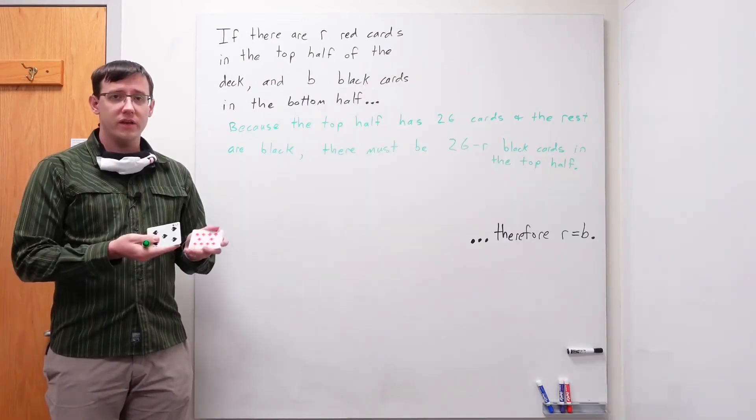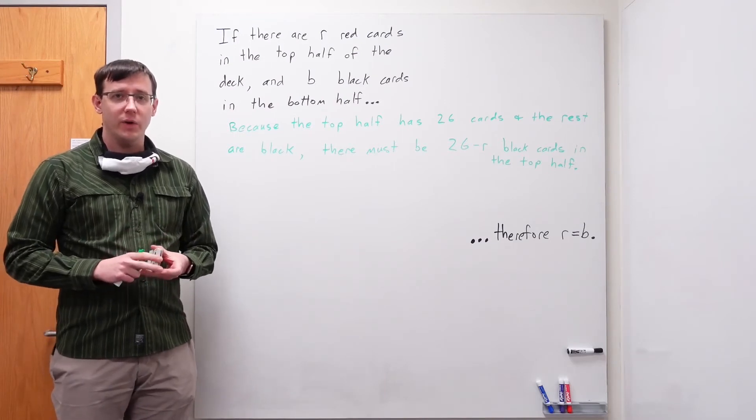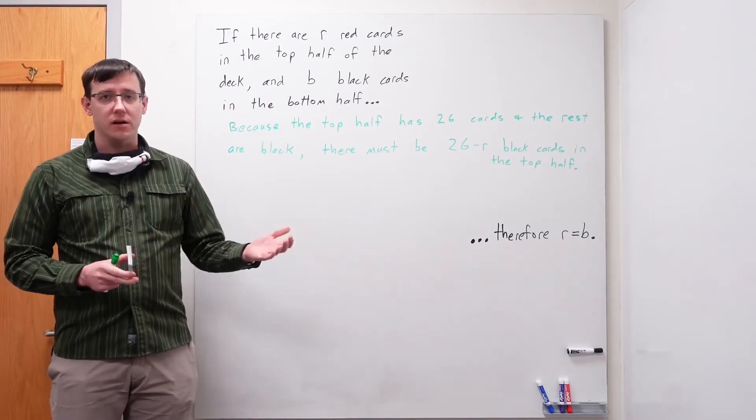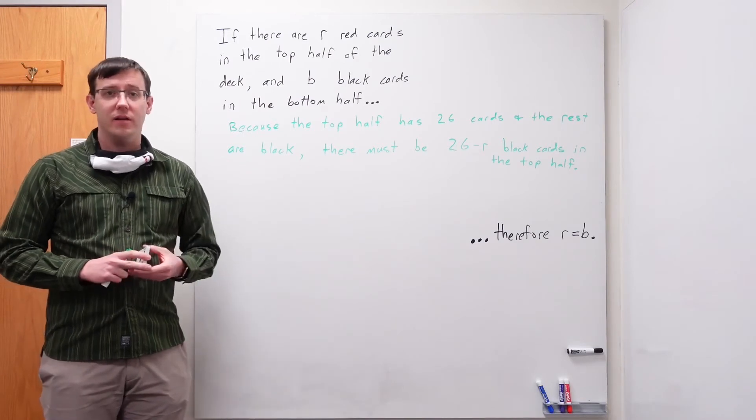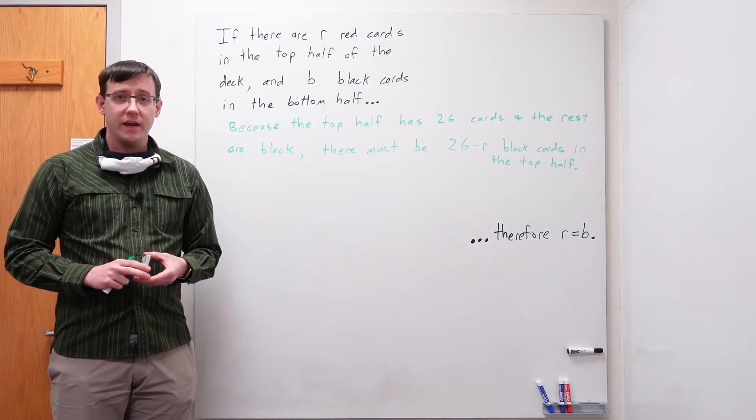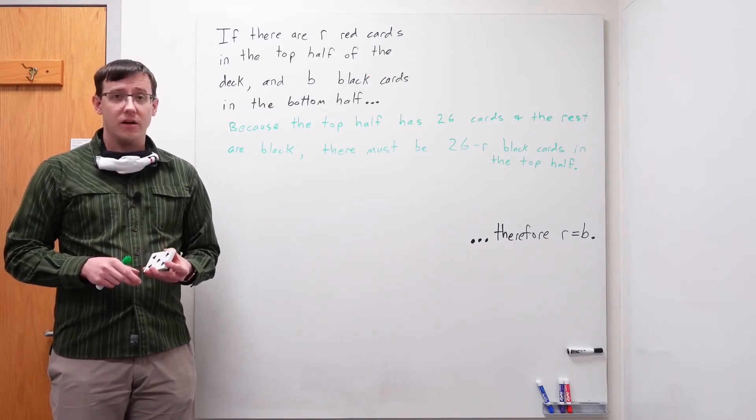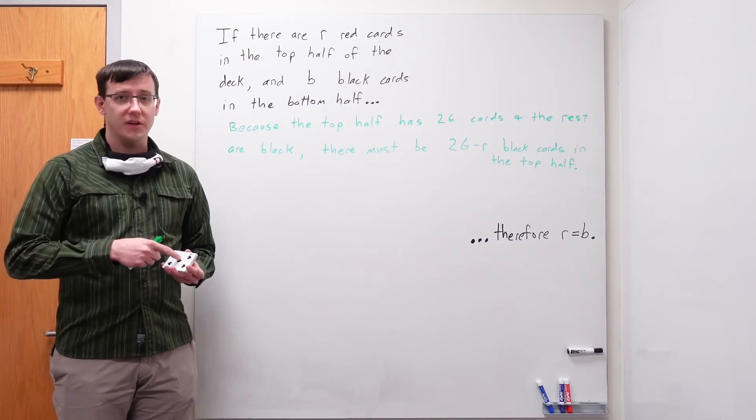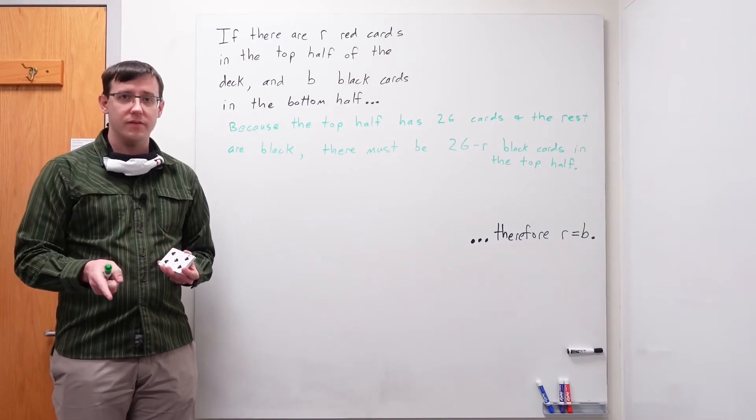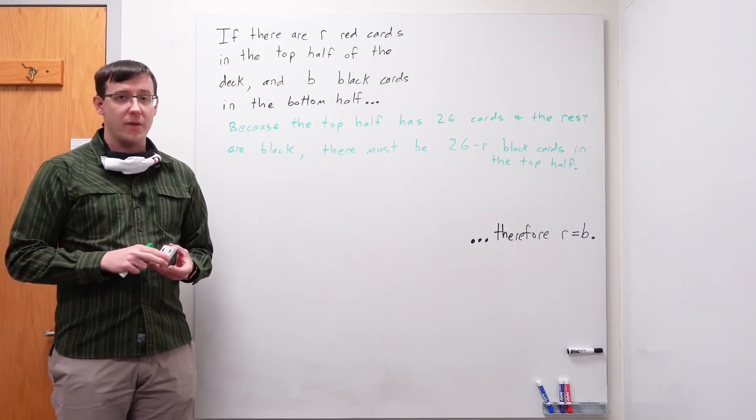So with 26 minus r black cards in the top half of the deck, we can now think about how many black cards are left in the bottom half of the deck. Well, to begin with, the deck had 26 black cards, and those black cards were split into some in the top half and some in the bottom half.